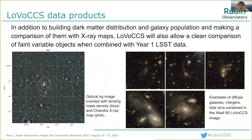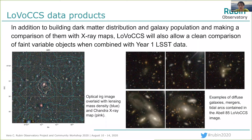The figure on the left shows the optical image of Abell 85 overlaid with the lensing mass distribution and X-ray map. At the bottom right, we show deep images of diffuse galaxies, mergers, and tidal arcs contained in the optical image. Those are from LoVoCCS images. We would like to point out that LoVoCCS will also allow a clean comparison of faint variable objects when combined with LSST year one data. Our lab newsletter in June this year has reported this survey. We are building a website and plan to finish our first paper by the end of this year, discussing processing details and preliminary results.